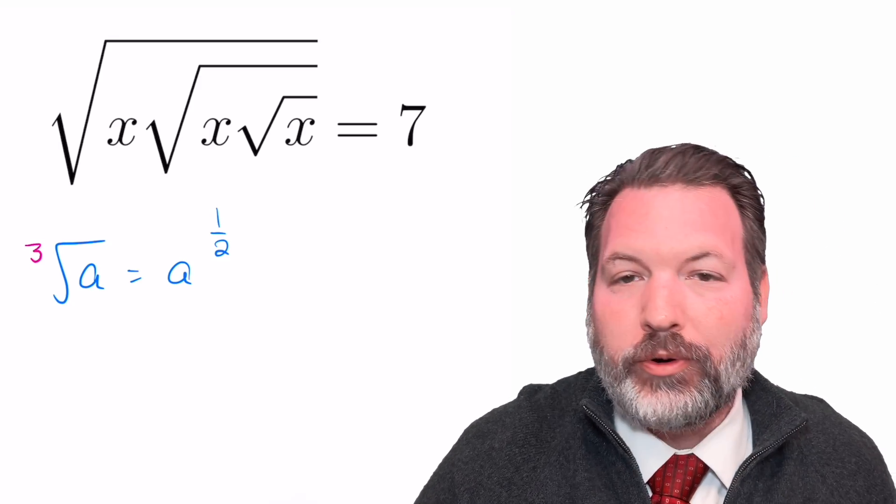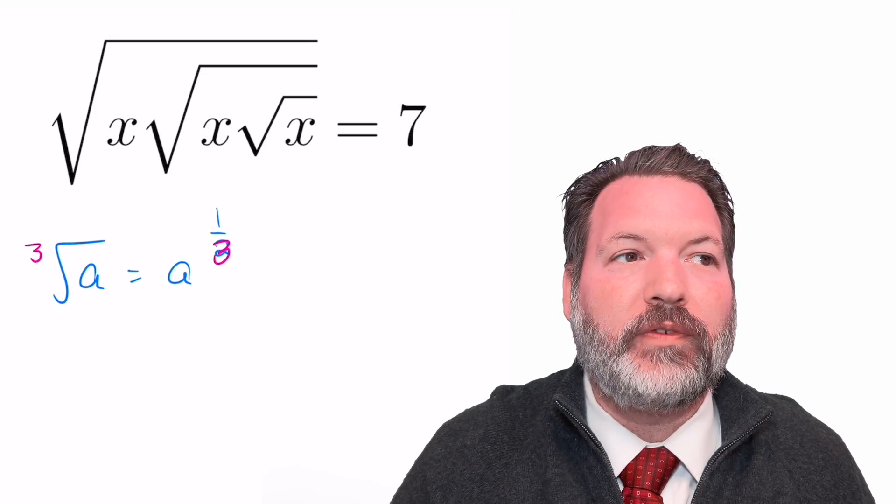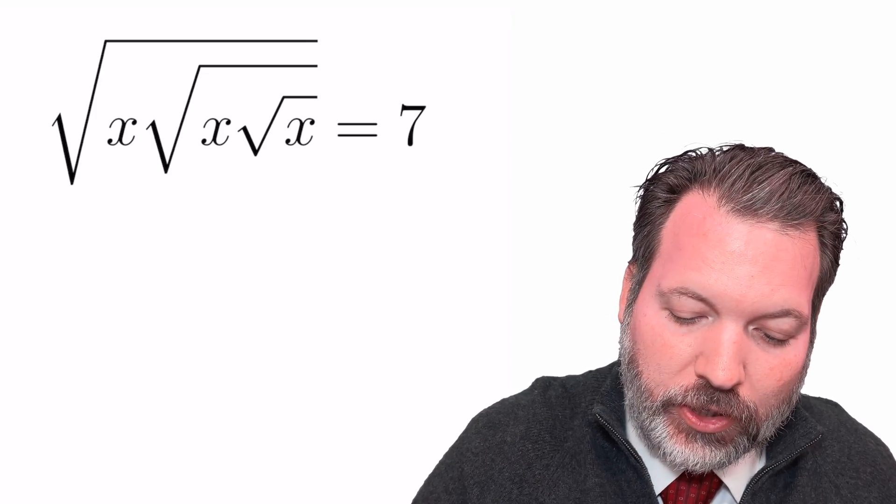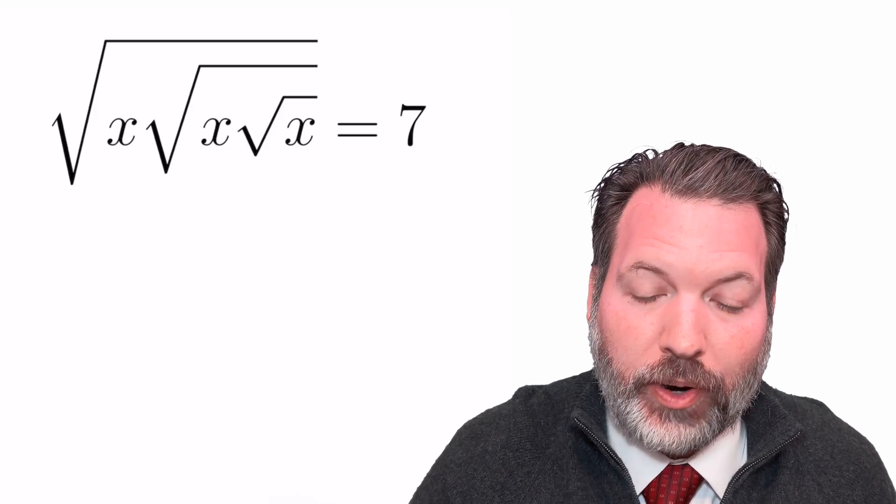If this had been a third root, for example, instead, then this wouldn't be the half power of a, it would be the one third power of a. But it is a square root, and so we're going to use this half power idea to rewrite this expression.